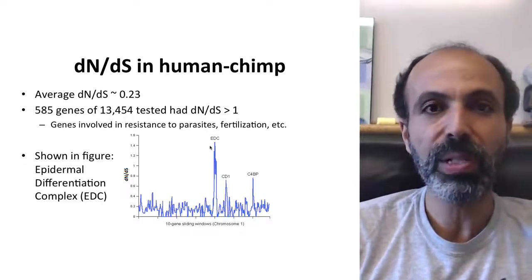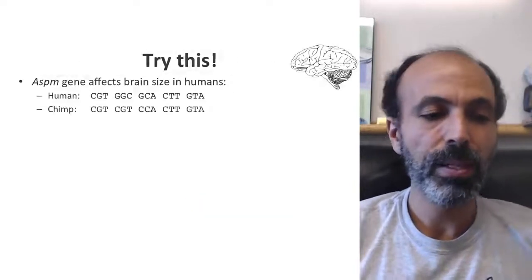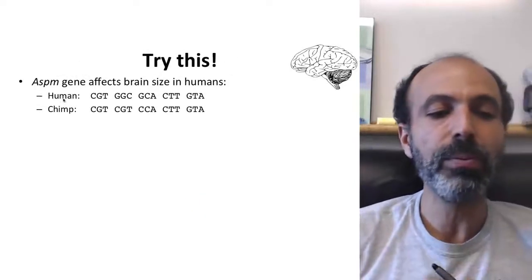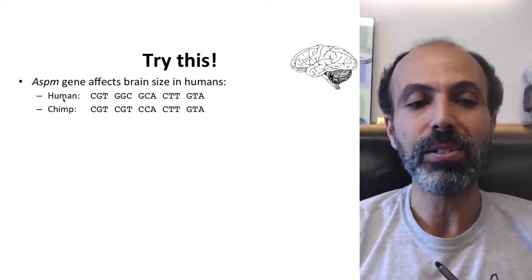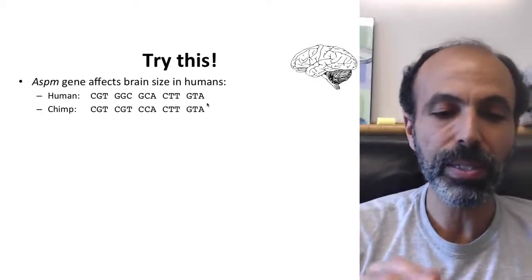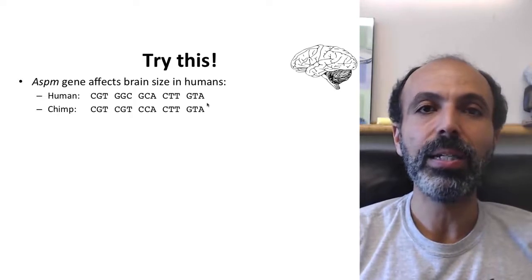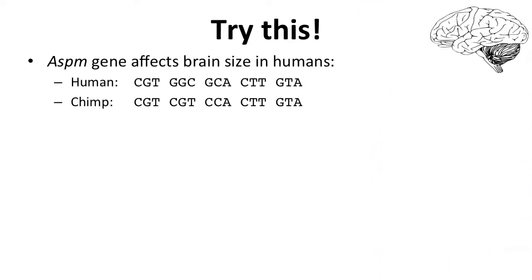Let me give you one to try yourselves here in an in-video quiz. Try this. This is the ASPM gene, which affects brain size in humans. I have here a set of sequences, and I want you to go through and calculate what the dN/dS value would be.